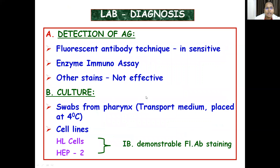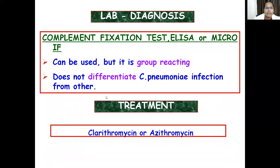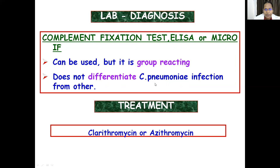For laboratory diagnosis of C. pneumoniae, fluorescent antibody technique is the most sensitive method. Enzyme immunoassay is used; standard stains are not effective for antigen identification. Swabs are collected from the pharynx and transported in medium at 4°C, then cultivated in tissue cell lines such as HL cells and HEp-2. Inclusion bodies are demonstrated by fluorescent antibody staining. Complement fixation test, ELISA, or micro-immunofluorescence can be used, though they are group-reacting and do not differentiate C. pneumoniae from others.